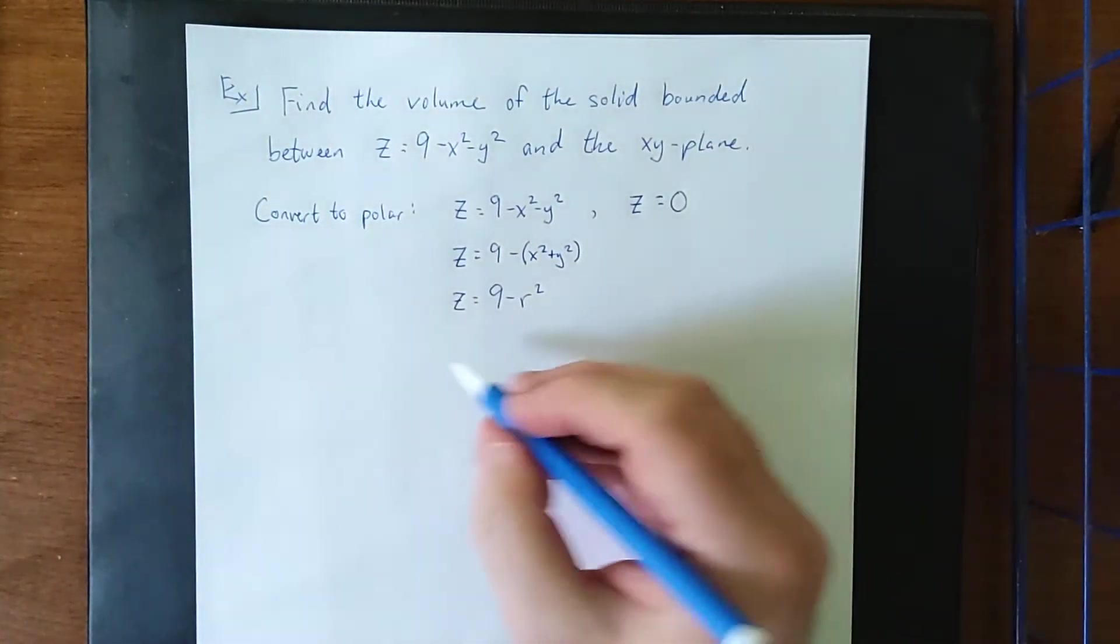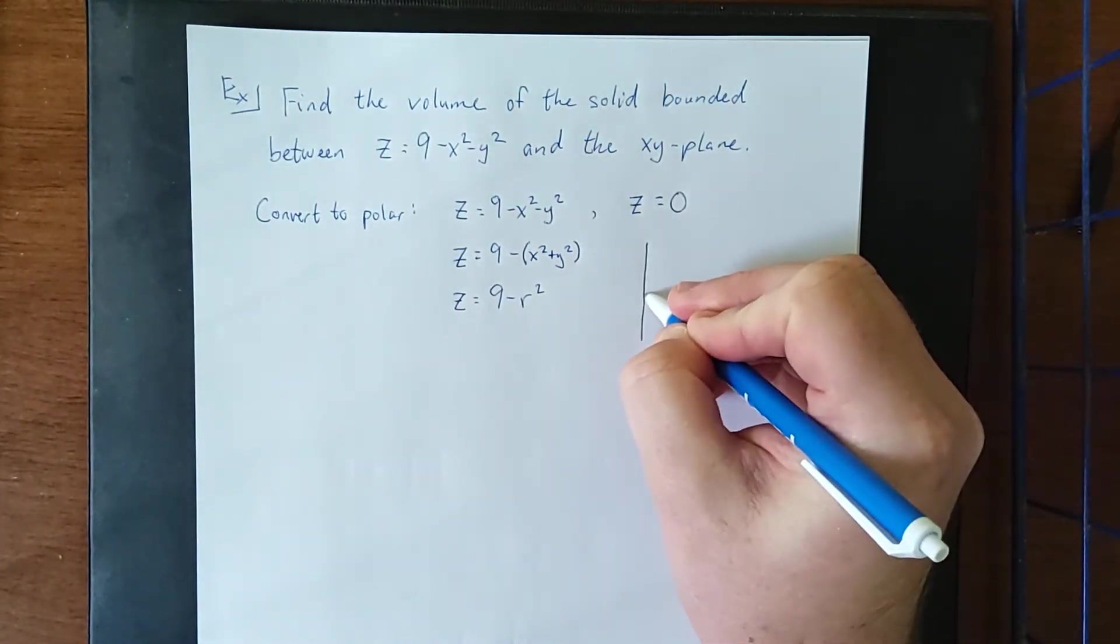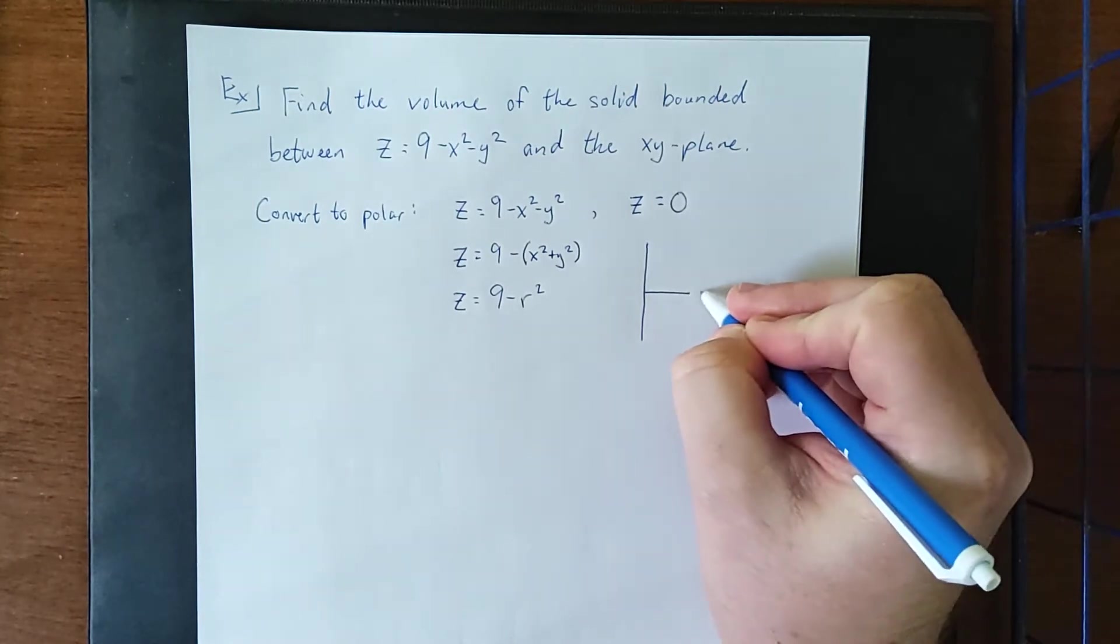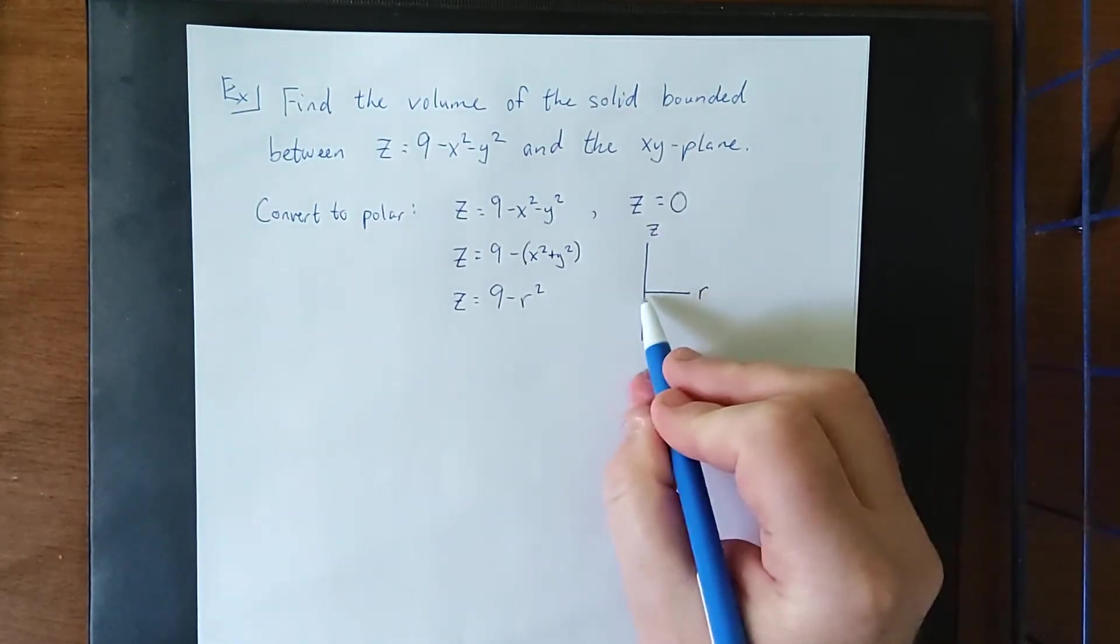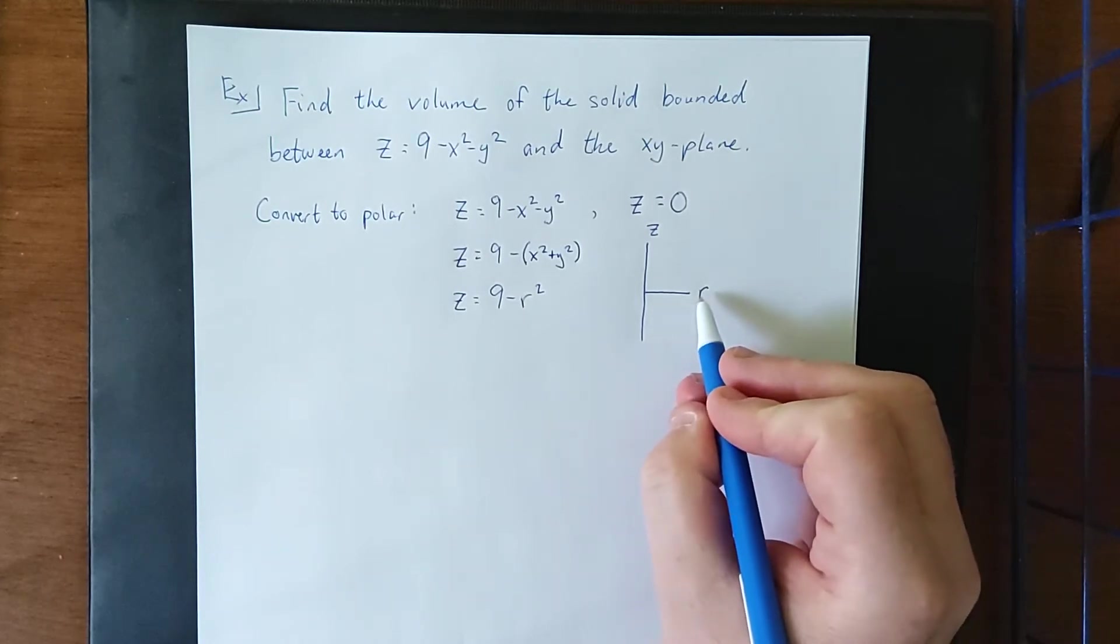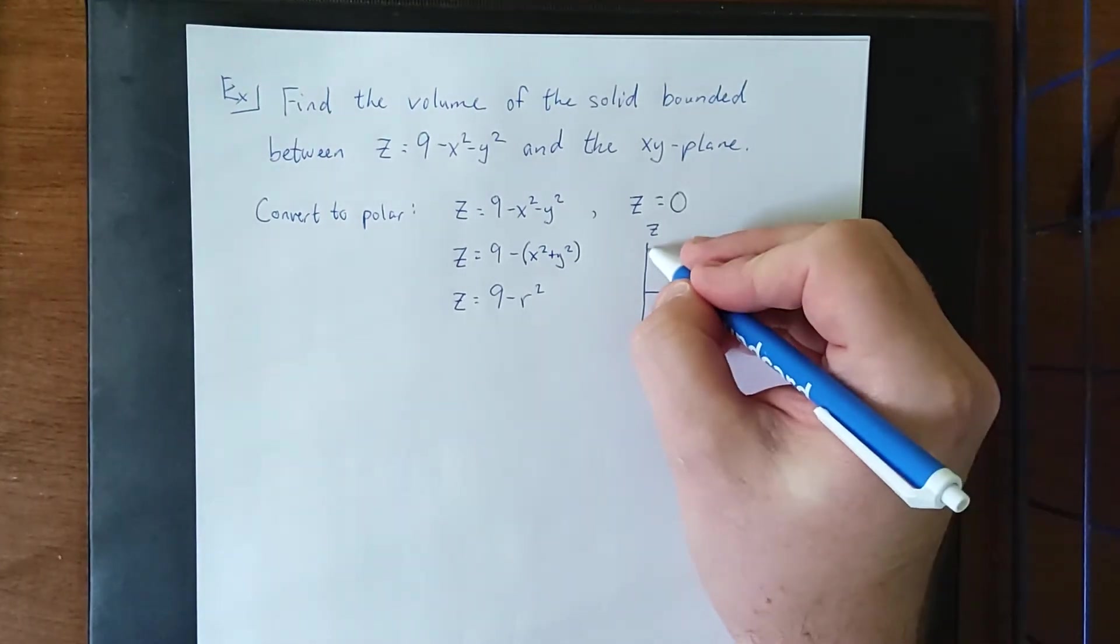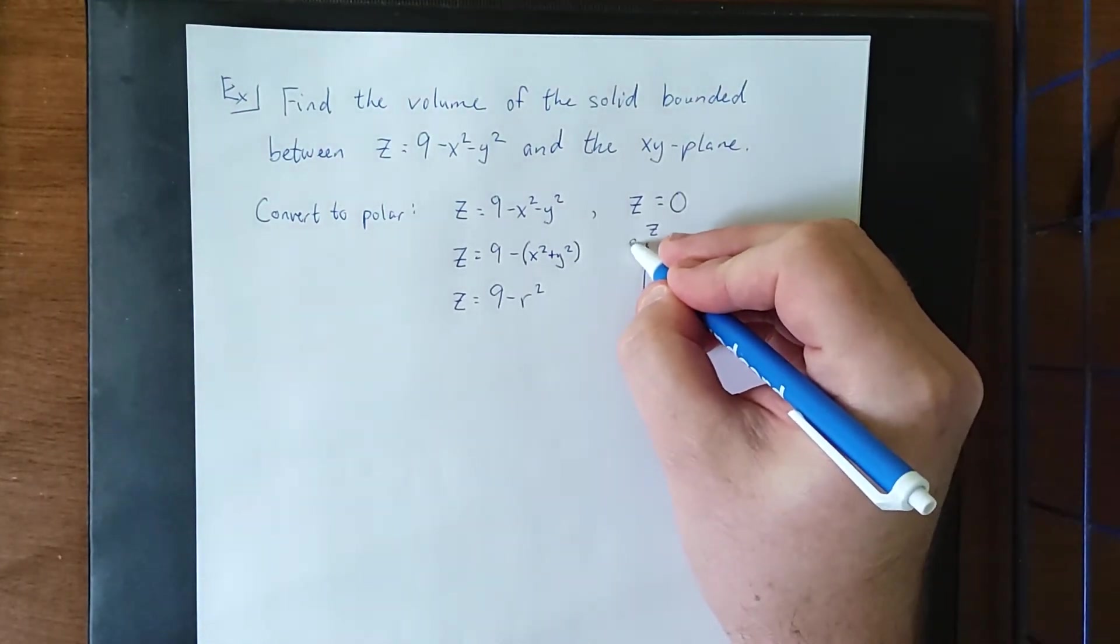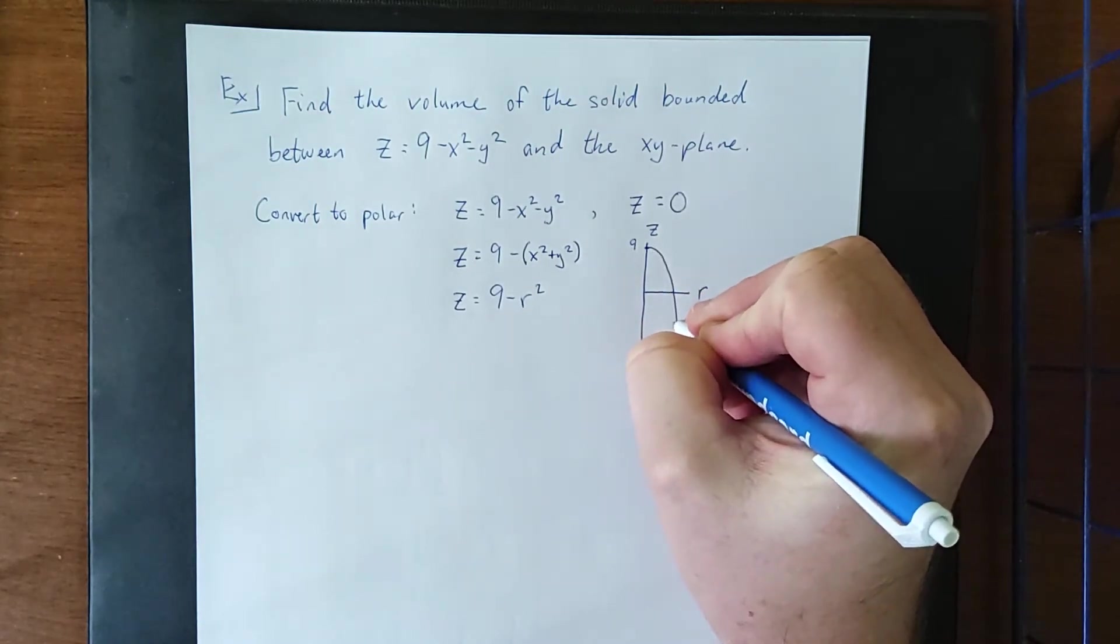Now this gives us an idea of what this is going to look like in terms of r and z. So in terms of r and z, z equals 0 would represent the r axis that represents the xy plane. Now z equals 9 minus r squared would look like a parabola, vertex up here at z equals 9, and opening in the downward direction.